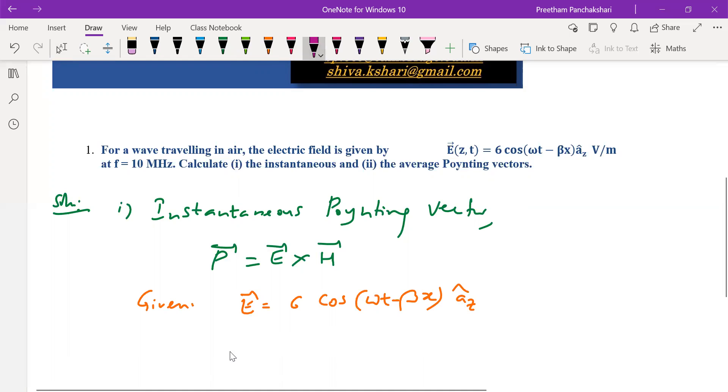On the other hand, H is given by its maximum value H_m cos(ωt - βx). And we have to find the direction of H. We can use the Poynting vector itself to find the direction.